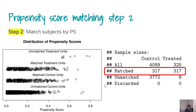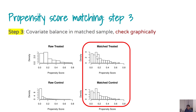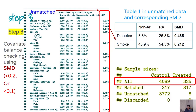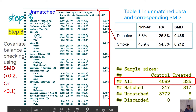Here we see pair matching: for 317 treated patients we found 317 controls, so many patients were not matched. You could potentially use one-to-10 matching to find more controls, which would improve your standard error. You can also see the propensity score balance in the matched group, and you can numerically check the balance.